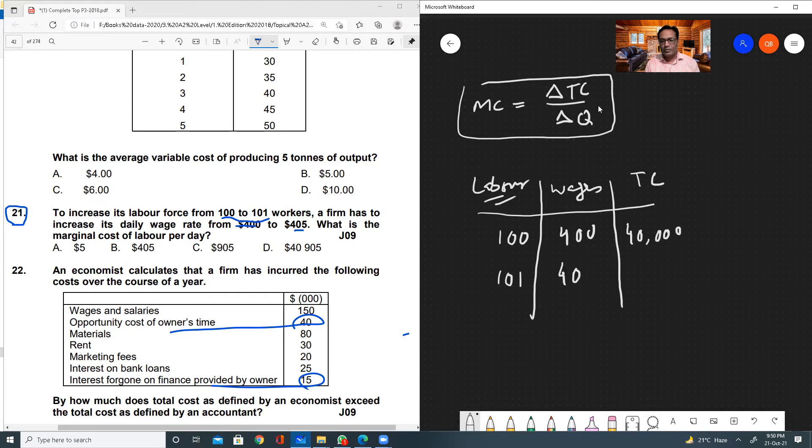Now we decided to employ one additional worker, and wage rate has increased to $405. To find total cost, we multiply 101 with 405. So 101 multiplied by 405 will give us $40,905. Now we need change in total cost, which would be $40,905 minus $40,000, that is equal to $905. And we need change in number of workers, that is change in quantity, which is 1 minus 100, equal to 1.